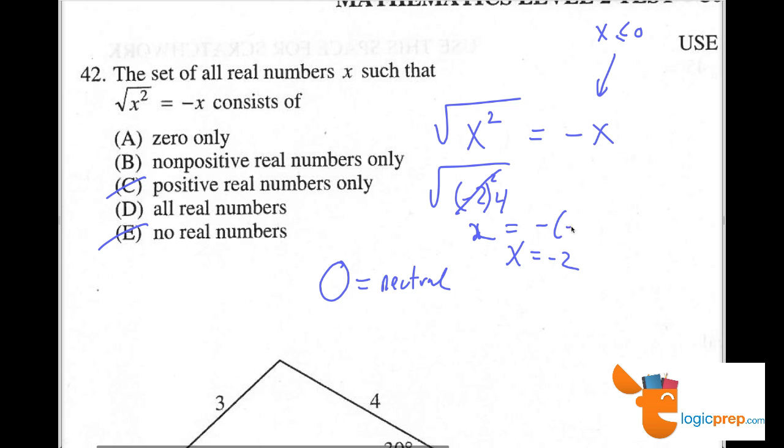And if we have a negative of negative x, negative of negative 2, that works, so we know that non-positive real numbers are the only numbers that would work for this particular equation.